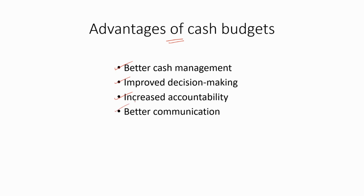Fourth, better communication: cash budgeting helps to facilitate communication and collaboration between different departments and stakeholders within a business by providing a common framework for understanding and managing cash flows. This can help to break down silos, promote collaboration, and foster a shared sense of purpose and responsibility across the organization. Thank you for watching. See you in the next video.